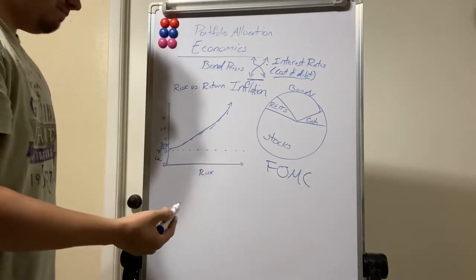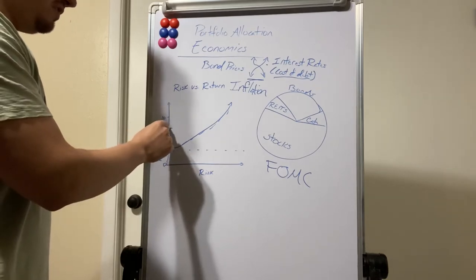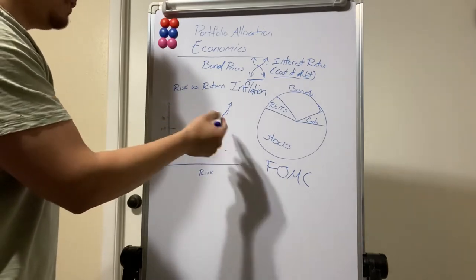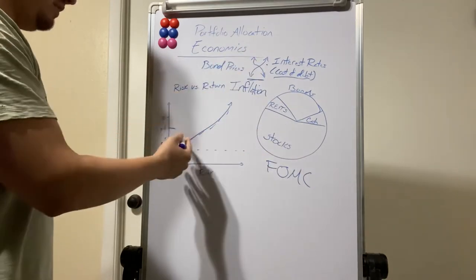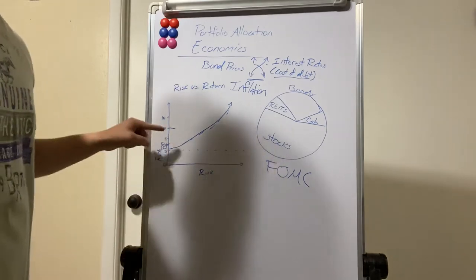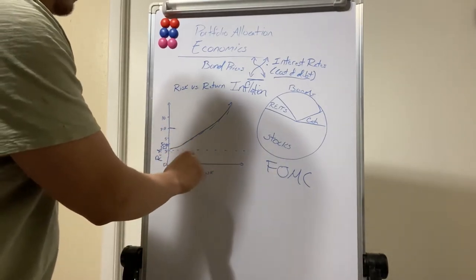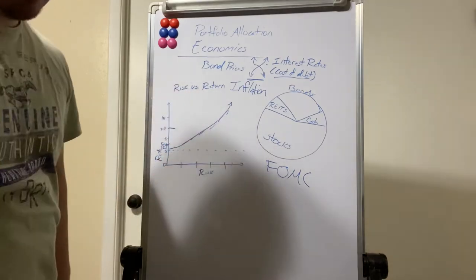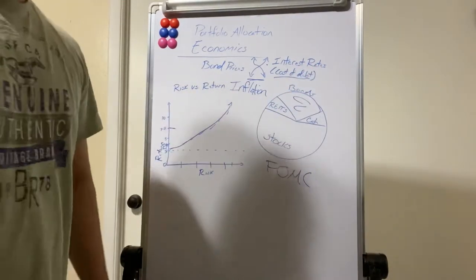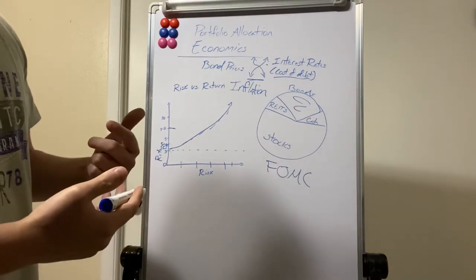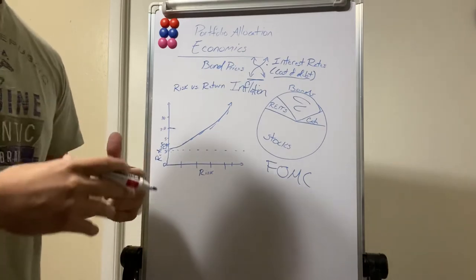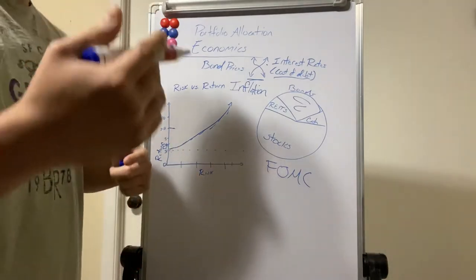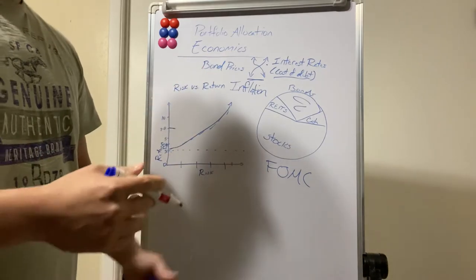Large cap stocks are typically yielding seven to eight percent, with mid-sized companies somewhat lower on the line correlating to their risk level. You can buy treasury bonds, municipal bonds, or corporate bonds. Corporate bonds are debt issued by corporations to raise money — corporations can raise money through issuing stock or issuing debt.